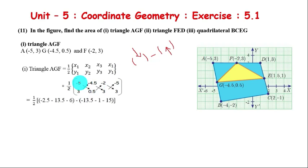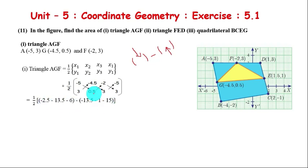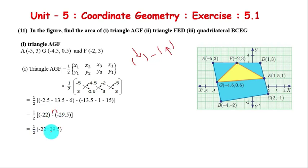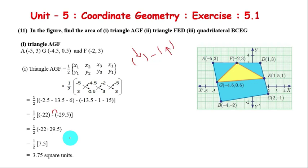So we have 1/2. Computing the multiplication: first bracket gives minus 2.5 minus 13.5 minus 6, and opening the second bracket gives minus 13.5 minus 1 minus 15. First bracket simplification gives minus 22; second bracket simplification gives minus 29.5. So: 1/2 of (minus 22 minus of minus 29.5). Minus minus becomes positive: 1/2 of (minus 22 plus 29.5) equals 1/2 of 7.5, which gives 3.75 square units. That's the result.